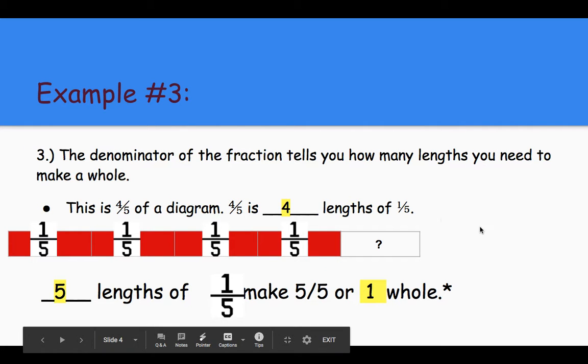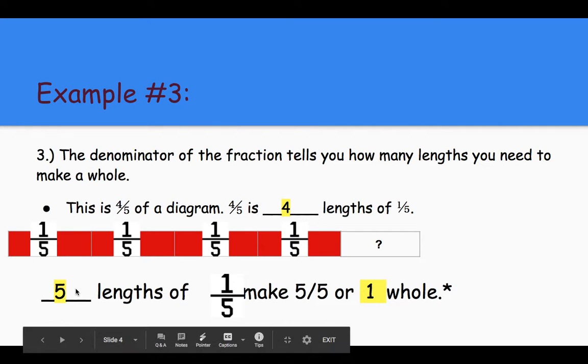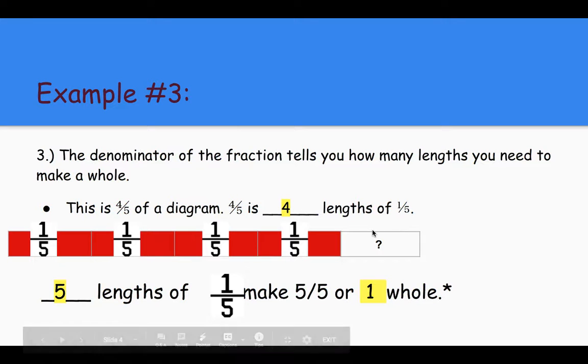Similar example here, just with some different numbers. The denominator of the fraction tells you how many lengths you need to make a whole. So the denominator tells you how many lengths there are in total, right? So in this case, the denominator is five. So we know there's going to be five in total. This is four-fifths of a diagram. Four-fifths is four lengths of one-fifth. So four-fifths is represented right here. One, two, three, four.